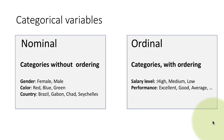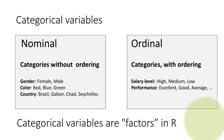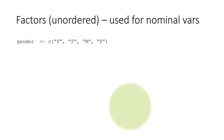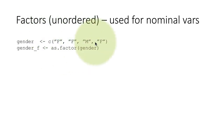As mentioned earlier, categorical variables are called factors in R. Both nominal and ordinal are categorical variables and both are called factors — nominal variables are unordered factors and ordinal variables are ordered factors. Let's first consider unordered factors using this vector of strings: f, m, f, f, m, f. This is a vector of character string values, and we want to convert it into a factor.